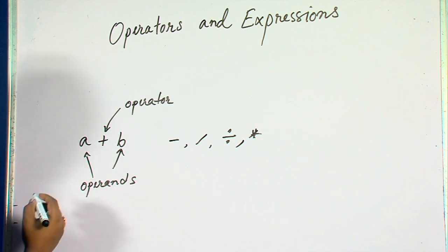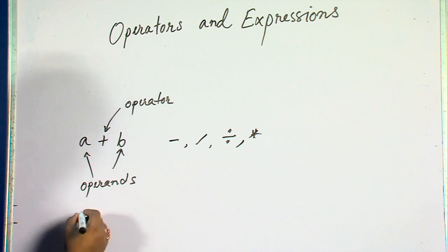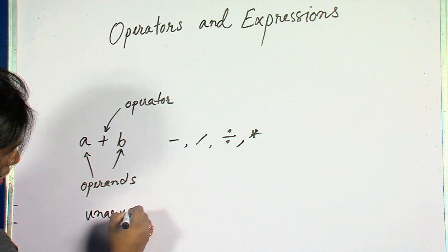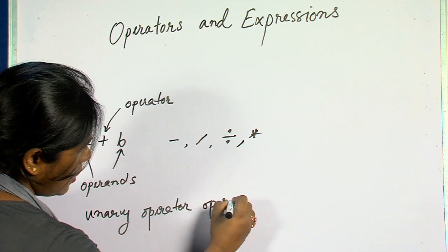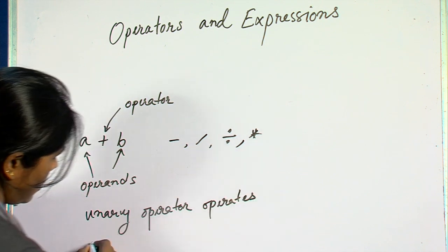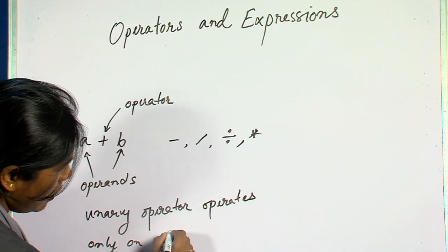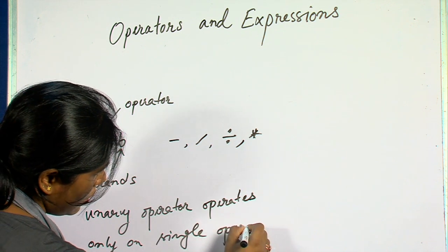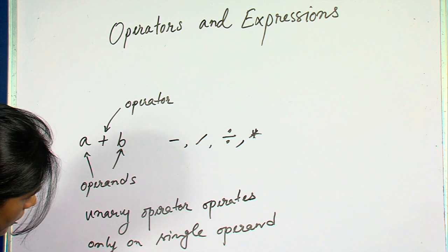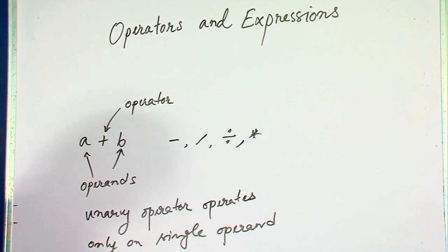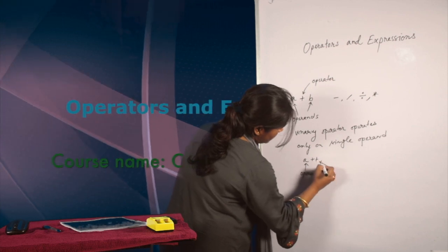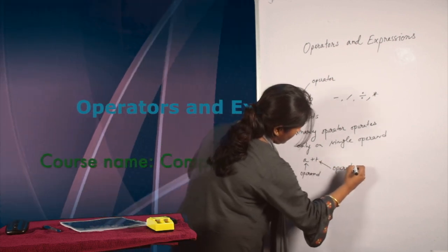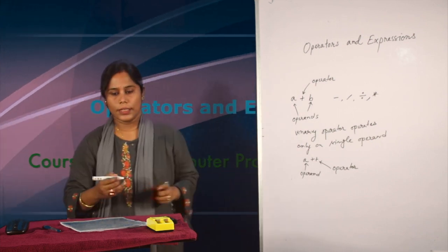A unary operator operates only on a single operand. For example, I have written a statement A plus plus. Here, the increment operator operates only on a single operand. That means an operator is a symbol.